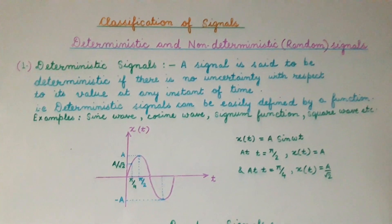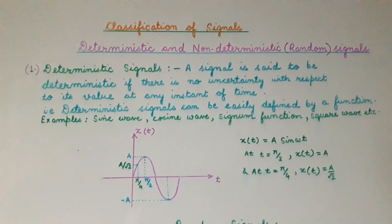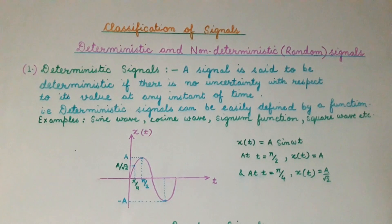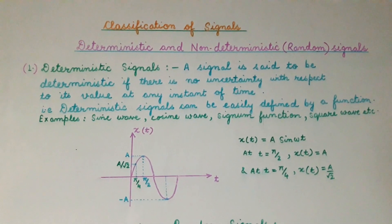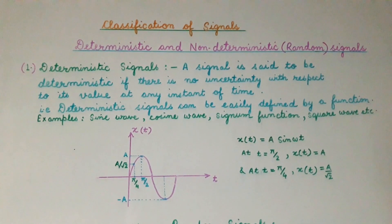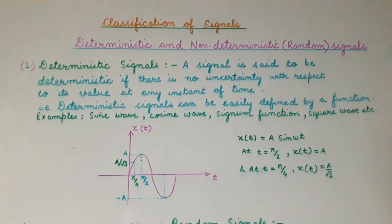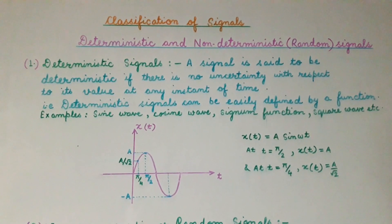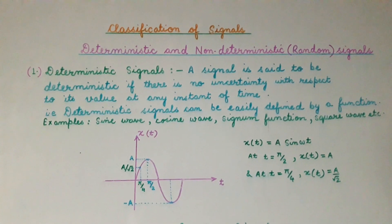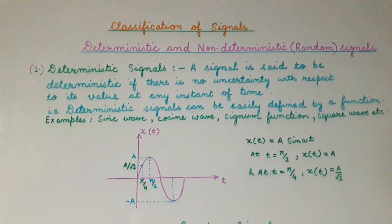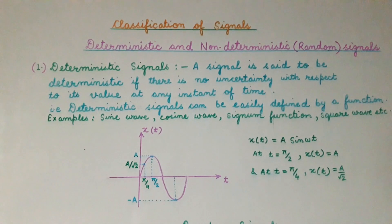Hello everyone, welcome to the signal and system class. Today we will be discussing deterministic and non-deterministic signals. The non-deterministic signals are also known as random signals. Let us first start with the deterministic signals — that is, what is a deterministic signal.